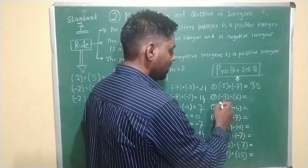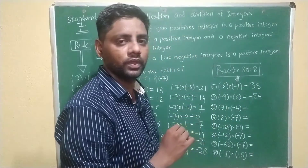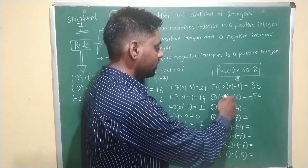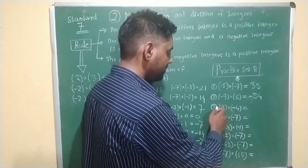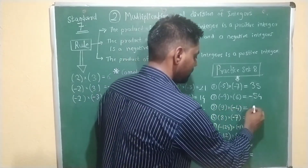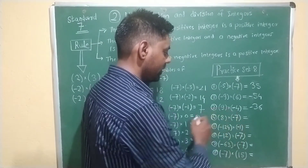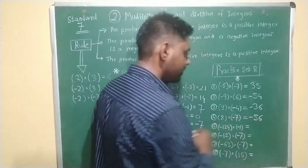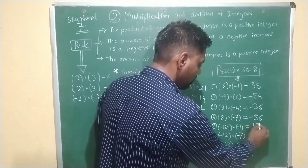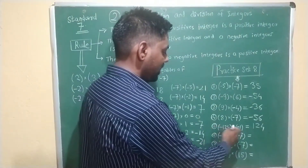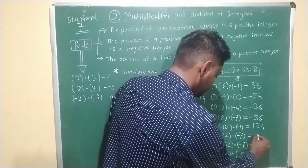Next example: the multiplication of minus 9 and 6 is equal to minus 54, according to the second rule — the product of a negative integer and a positive integer is always a negative integer. Next example: 9 into minus 4 is minus 36. Next example: 8 into minus 7 is minus 56. Minus 12 multiplied by minus 1 is plus 12 — minus minus becomes positive. Next, minus 12 multiplied by minus 7: the answer is plus 84.